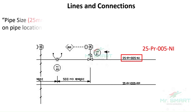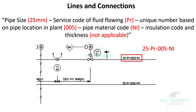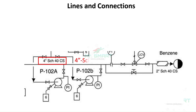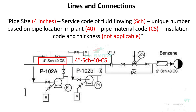You can notice the pipe number in the drawing here as 25PR005NI, which says this pipe size is 25mm, having a fluid with service code PRG flowing inside, a unique plant code of 005, and the material code for the pipe is NI. Insulation is not applicable to this pipe, as the fifth part of the line number is missing. In some drawings, the pipe size will be defined in a different measurement unit system. For example, here in this drawing the pipe size is defined in inches as 4 inches, having a fluid with service code SCHG flowing inside, a unique plant code of 40, and the material code for the pipe is CS. Insulation is not applicable to this pipe. Understanding line numbers will give you details about the pipes.